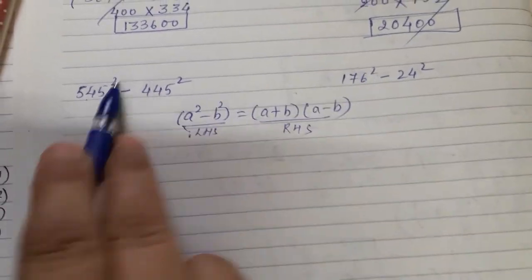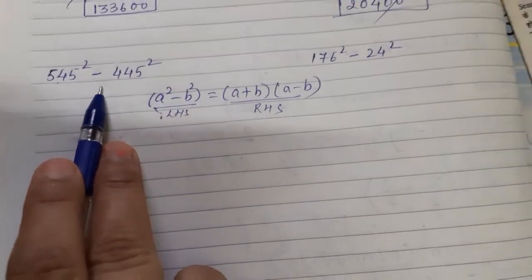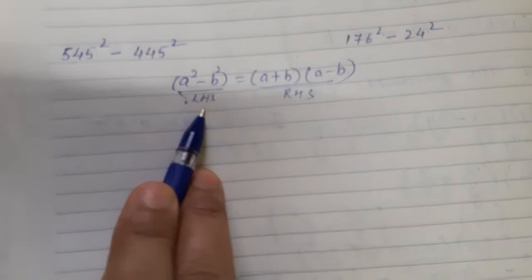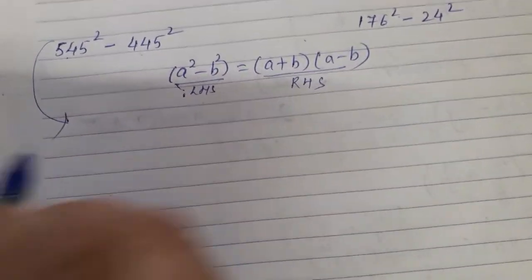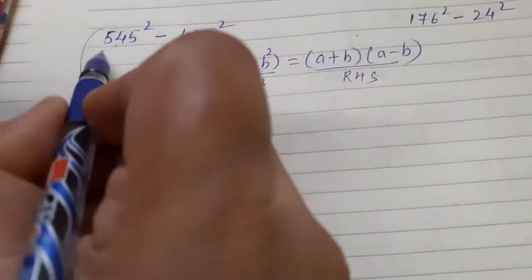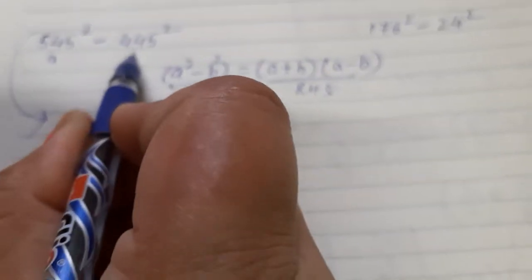First we are going to take this question. What is the value of a here? 545. And the value of b is 445.